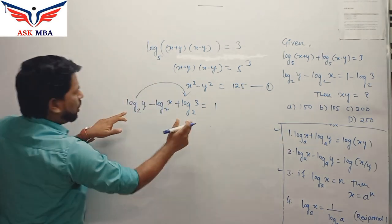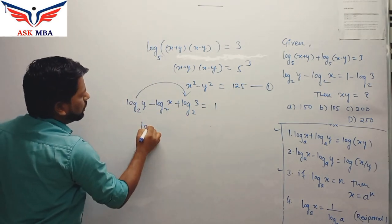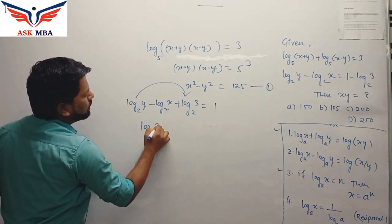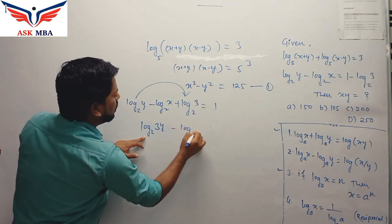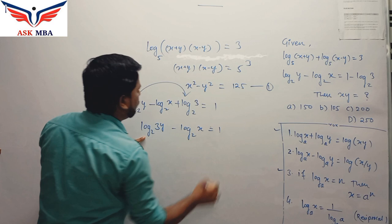So you can use the first property for these two terms. After using first property on these terms, we will get log base 2 of 3y minus log base 2 of x equal to 1.